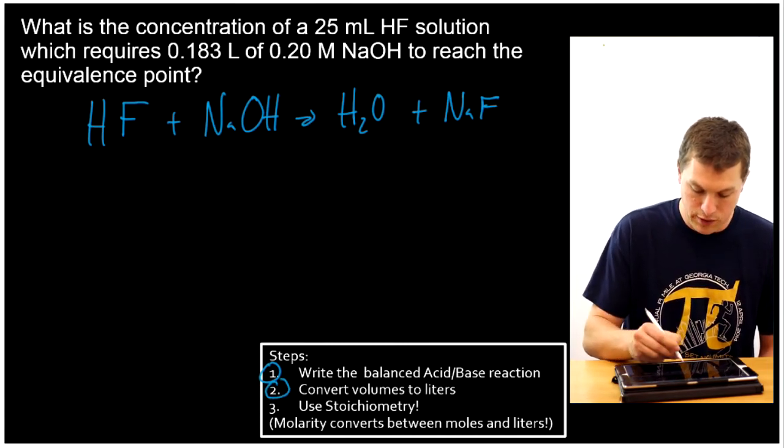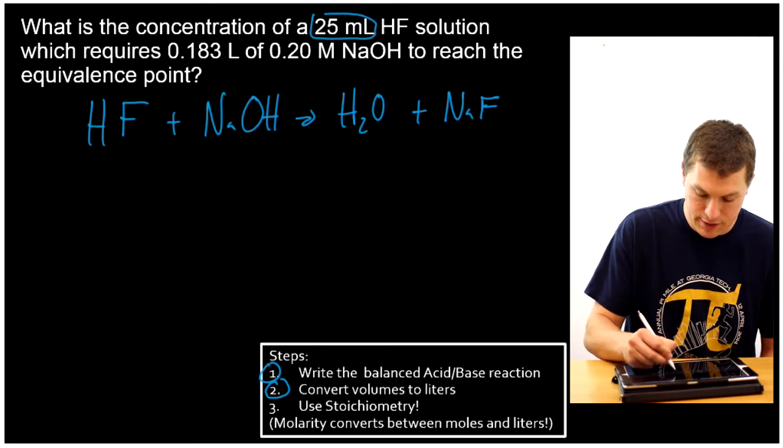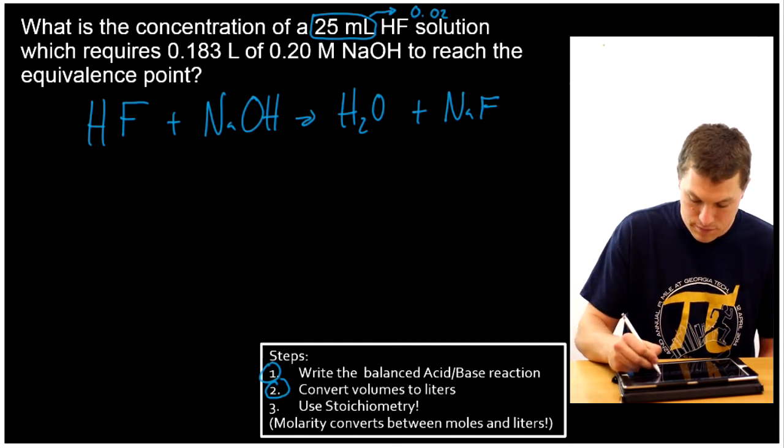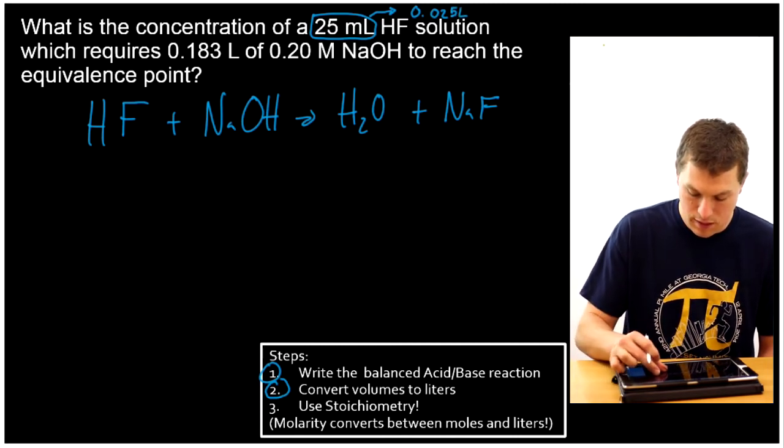So we write our balanced acid base reaction, and then we're going to convert any volumes to liters. Well, I need to take my 25 milliliters and take that to liters. Again, I just divide by 1000 and that's going to give me 0.025 liters.